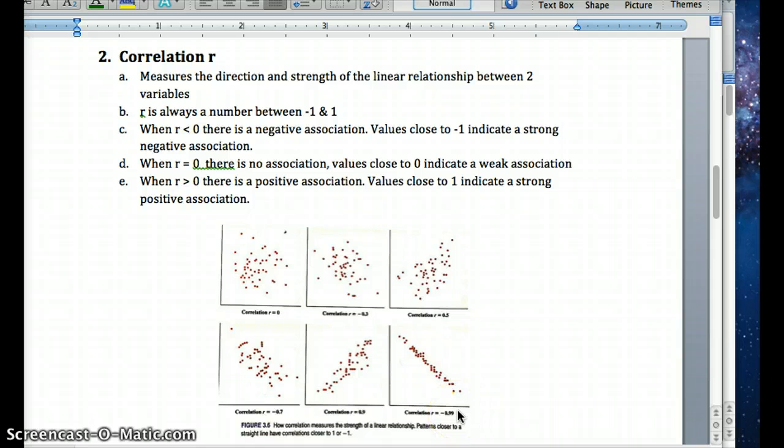So R, the variable R, up here, measures the direction and strength of the linear relationship between our two variables. So it's always going to be between 1 and negative 1. 1 indicating a strong relationship, positive association, meaning lower left to upper right, positive slope.